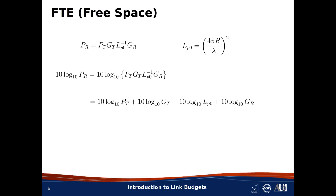Now, each of these terms is separately in decibel-type units, so let's call each one of those out. If P_t was in watts, then it'll now be in dBW, that is decibels relative to 1 watt. P_r, similarly, will be in dBW.